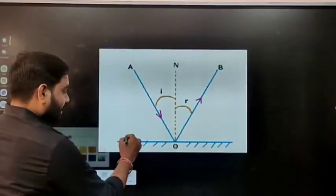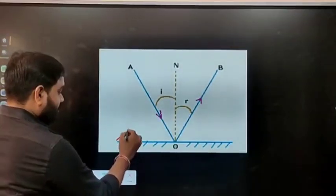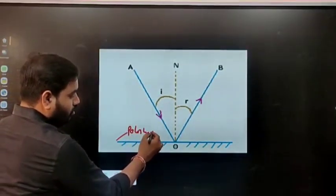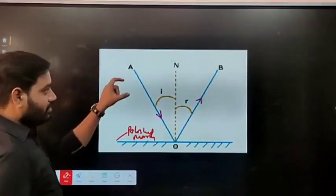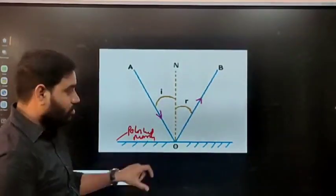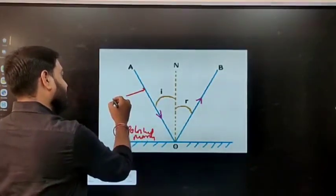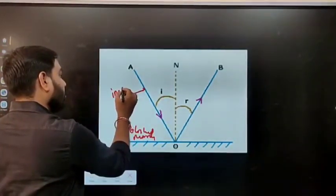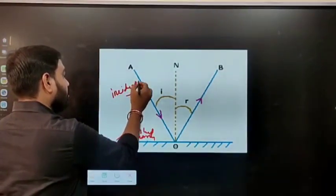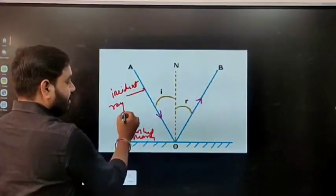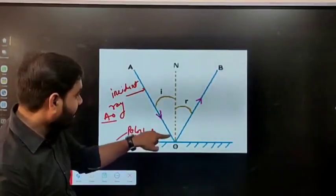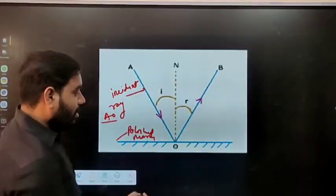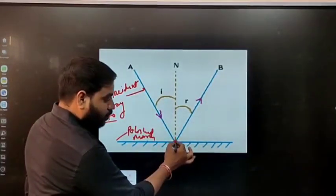One side is polished mirror and this ray is coming down, that is called incident ray. This AO ray is coming down on the mirror, that is called incident ray, and this is the striking point O.